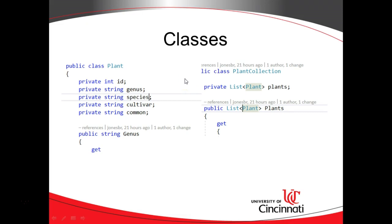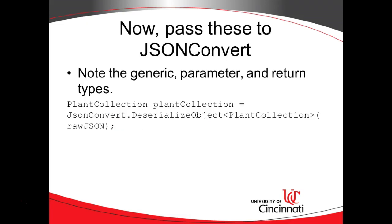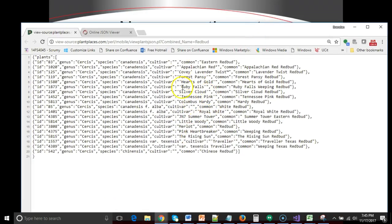Now let's look at how we can take the JSON data and feed it into this object series using JsonConvert.DeserializeObject from the JSON.NET package. Pay very close attention to this line — it's very important. We have a variable called plantCollection of type PlantCollection. Capital P means the class; lowercase p means the variable. On the right side, we have JsonConvert.DeserializeObject. The two most important parts of this line are the generic identifier and the JSON stream — a single string that represents raw JSON data, all the text you see on screen.